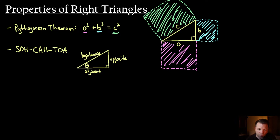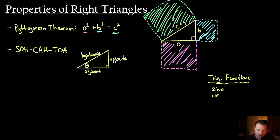Using this terminology, we can use the acronym SOH-CAH-TOA to define our first three trigonometric functions. The first three are going to be sine, cosine, and tangent. With SOH, it basically says that S is for sine, O is for opposite, H is for hypotenuse. And we say that the sine of theta, of the angle, is equal to the opposite side over the hypotenuse.